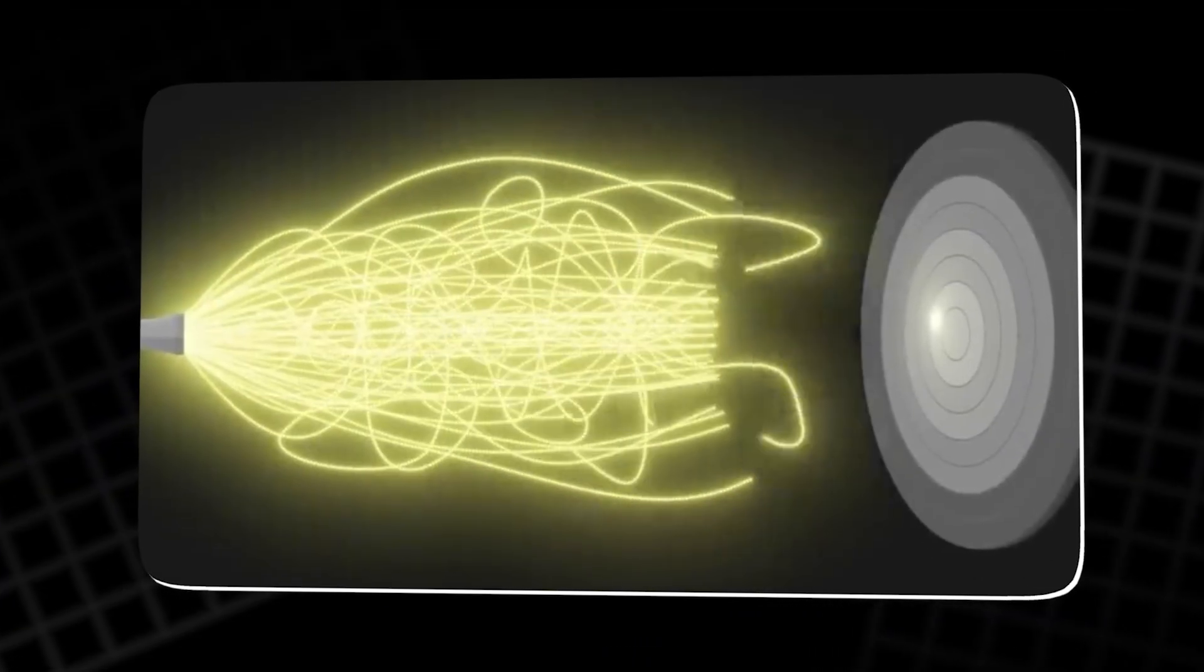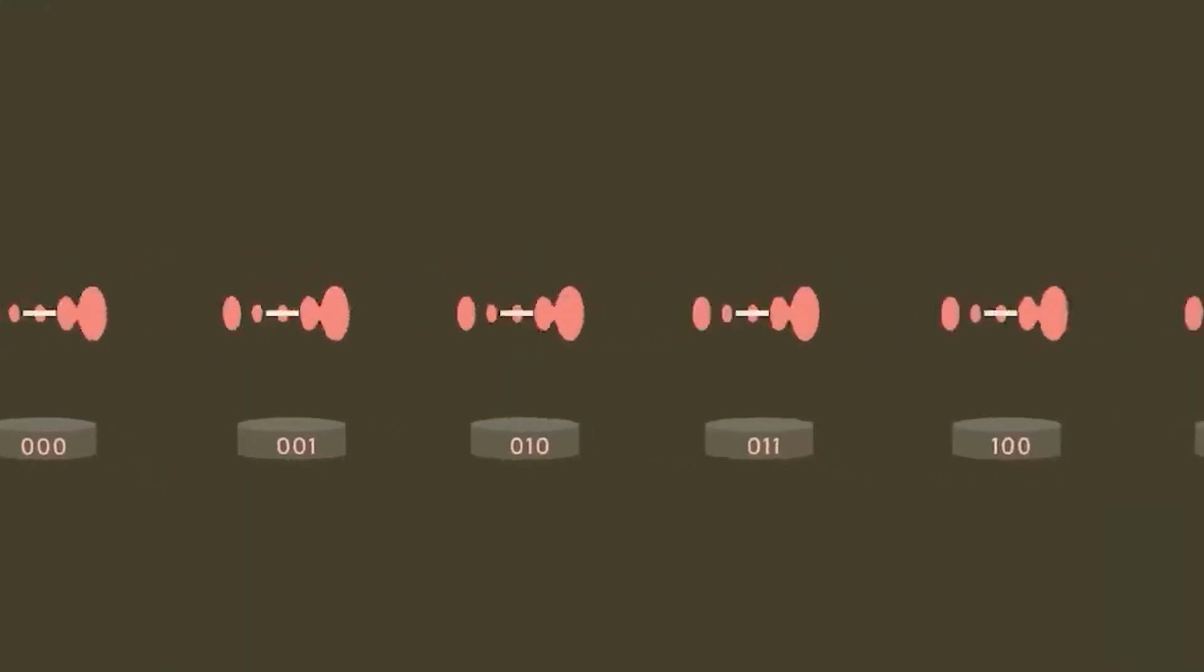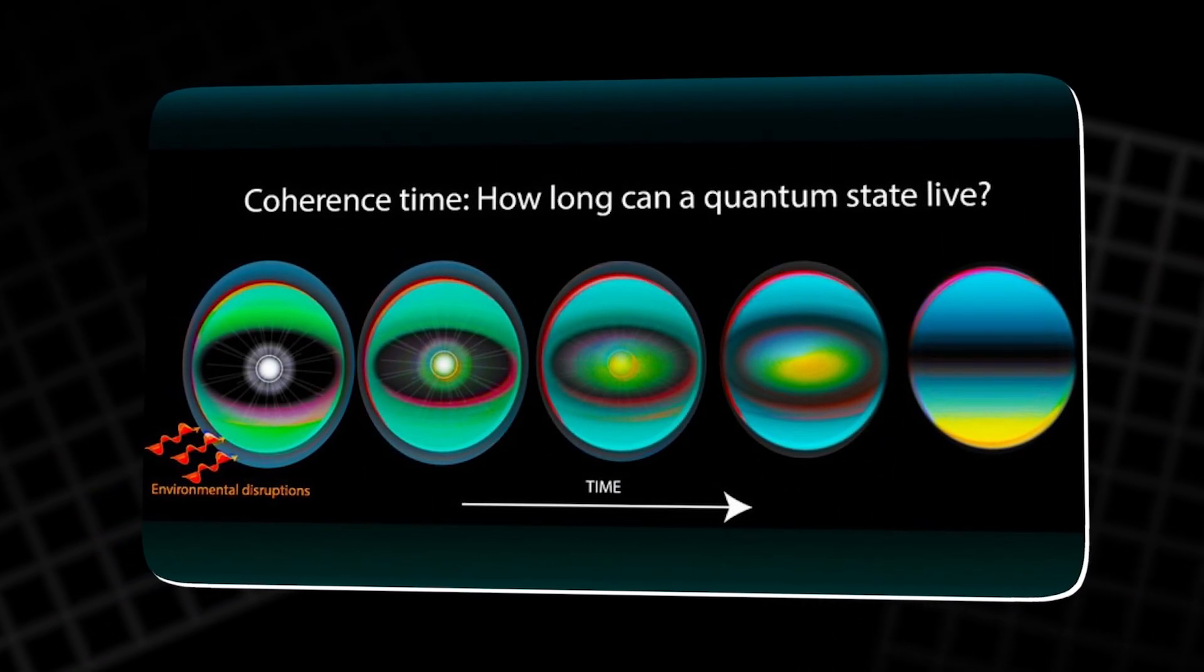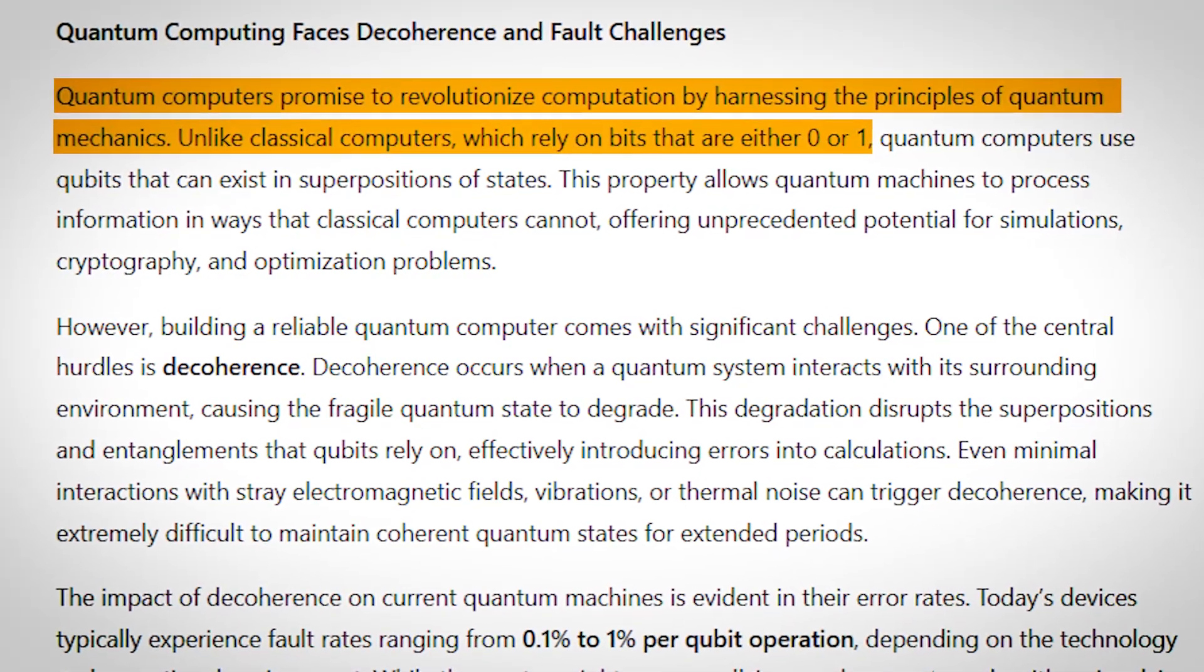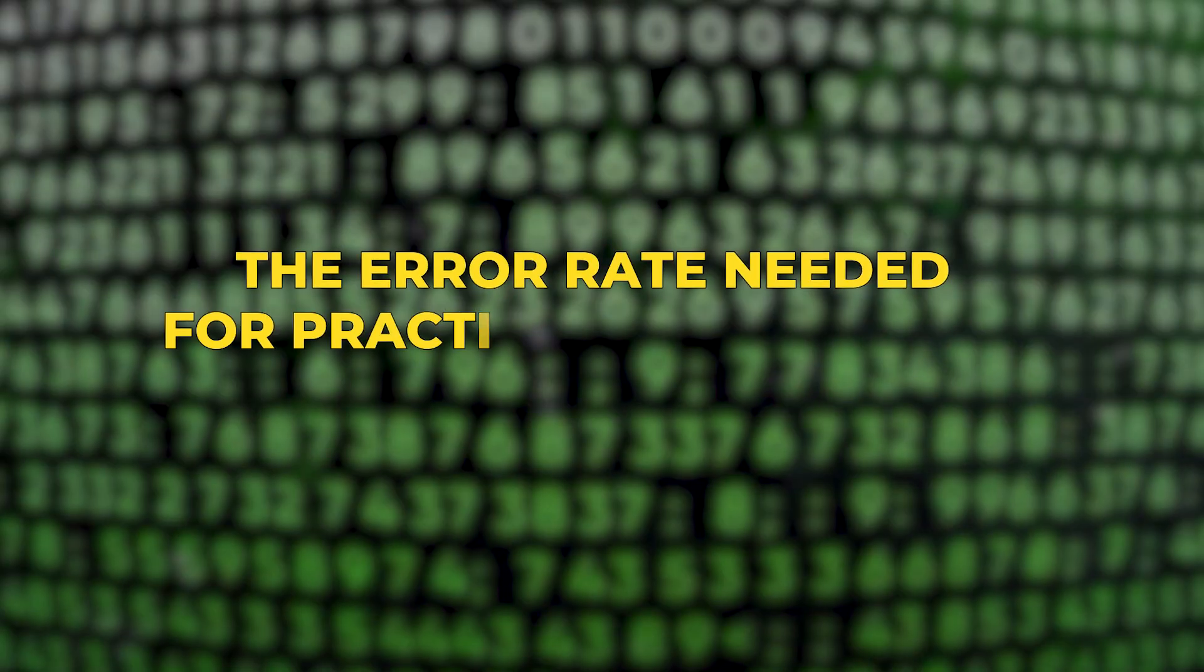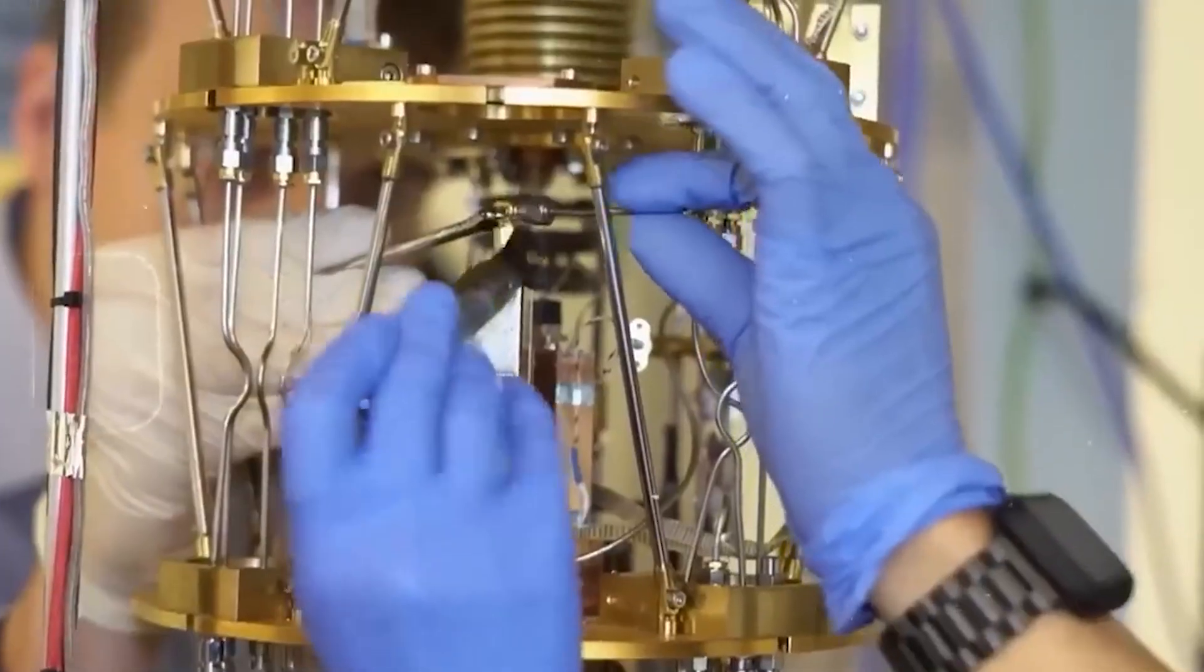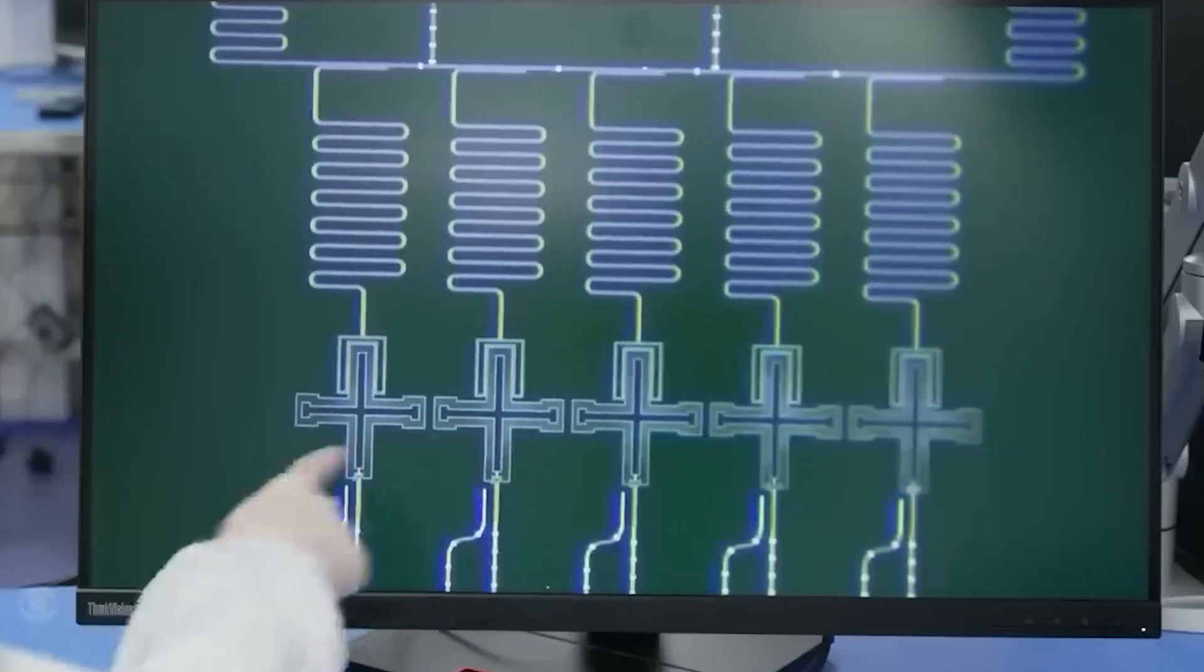But the dream comes with a very stubborn obstacle. Qubits are delicate. They collapse with even the slightest disturbance: a stray magnetic field, a change in temperature, or microscopic vibrations. The result is decoherence, where the quantum state degrades and errors flood the system. Current machines experience fault rates between 0.1% and 1%. That may not sound like much, but for comparison, the error rate needed for practical applications must be closer to 1 in 10 billion. In effect, the marriage proposal written carefully in the sand is constantly at risk of being washed away by the tide.